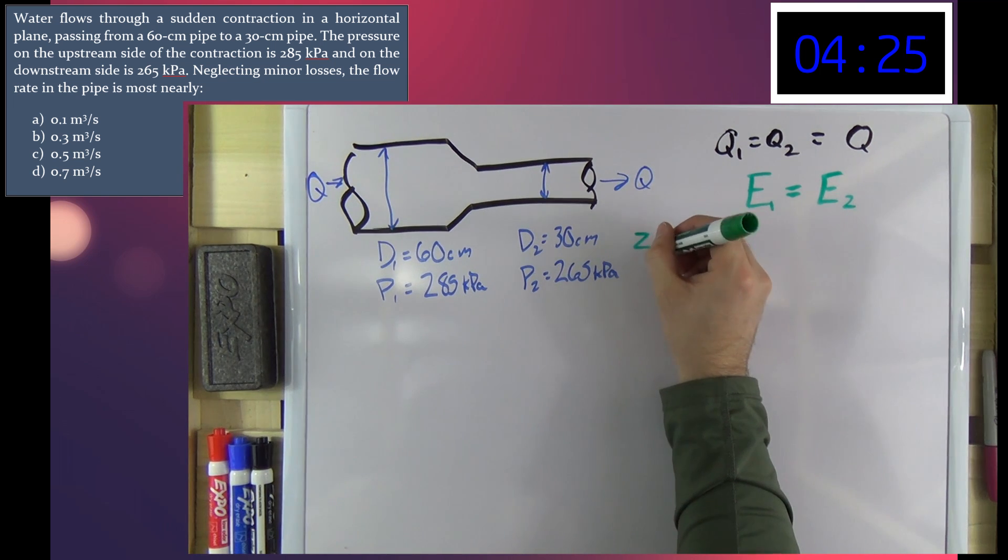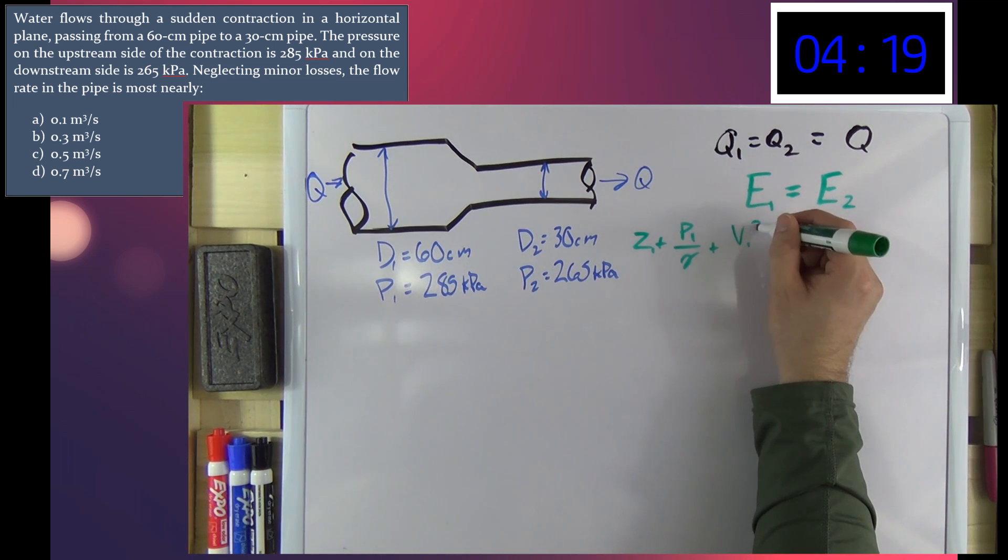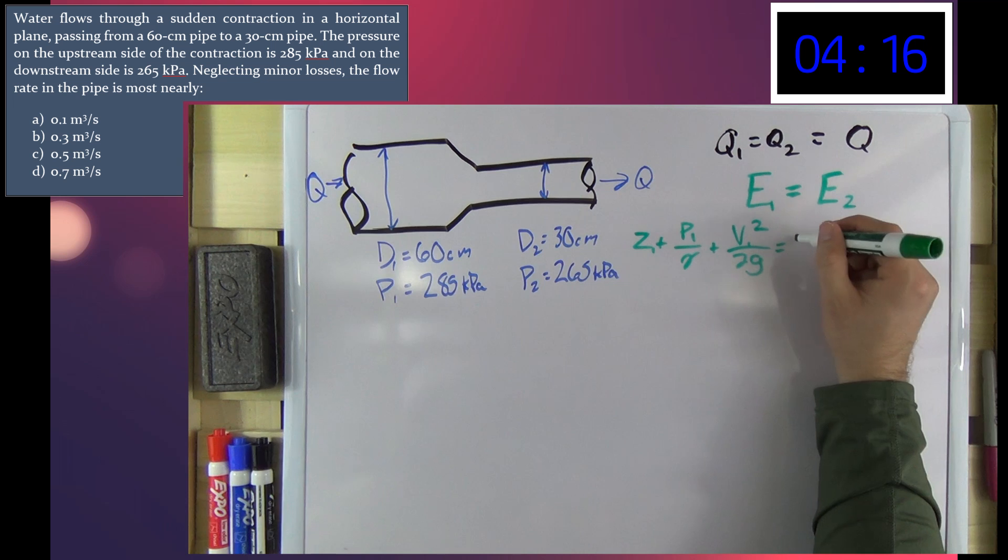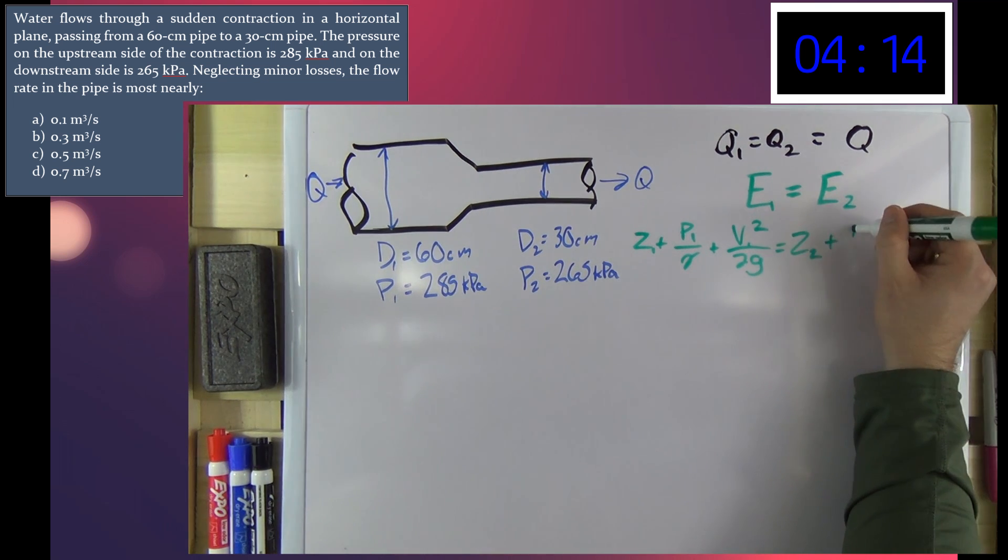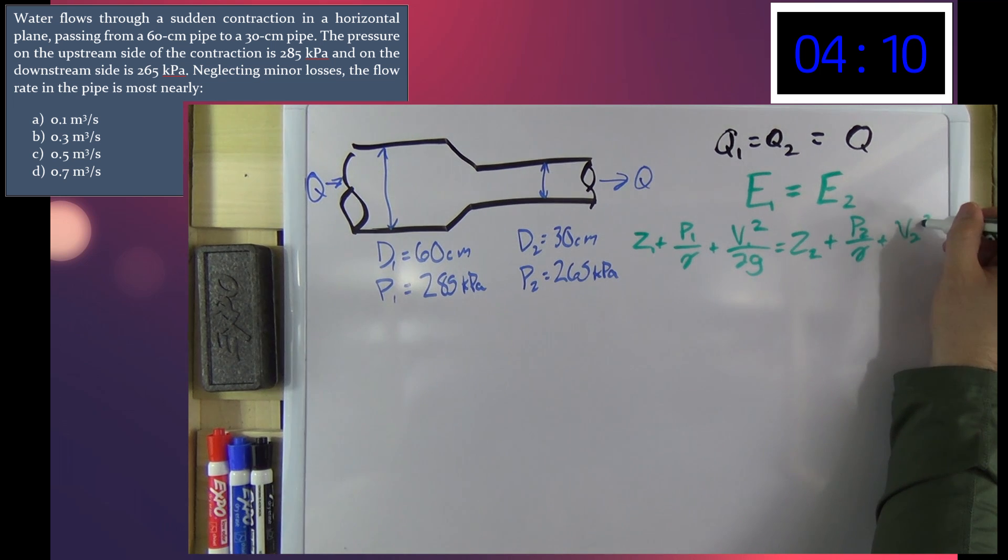We got Z1 elevation plus pressure 1 over gamma plus velocity 1 squared over 2G is equal to Z2 plus P2 over gamma plus V2 squared over 2G.